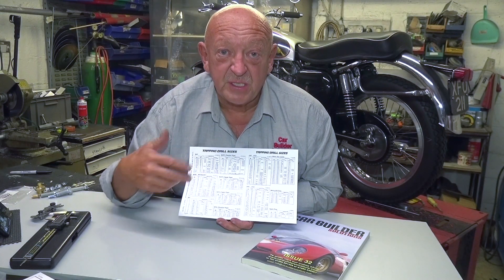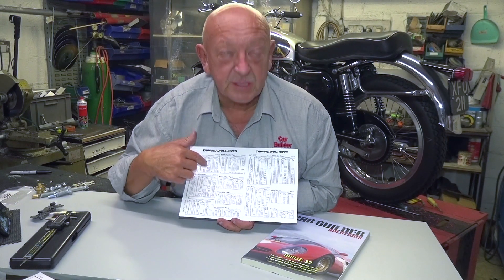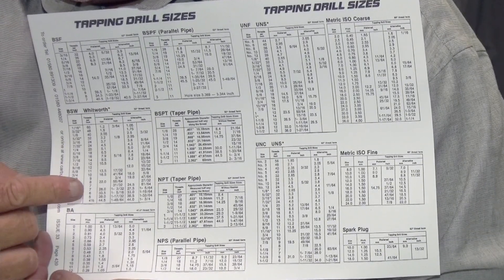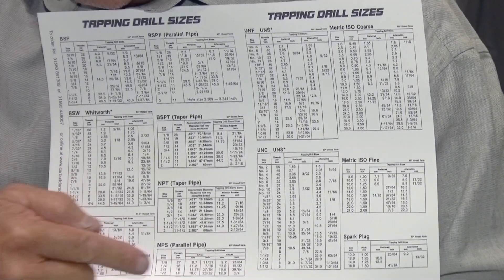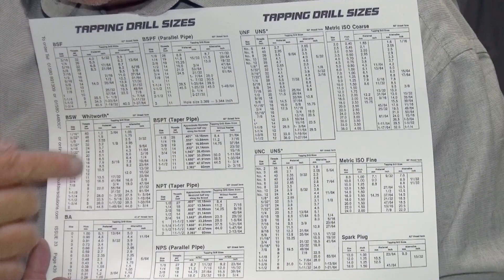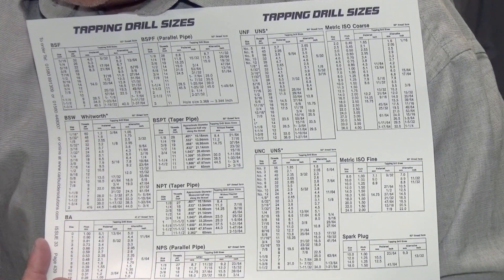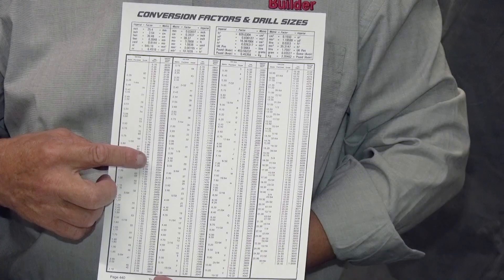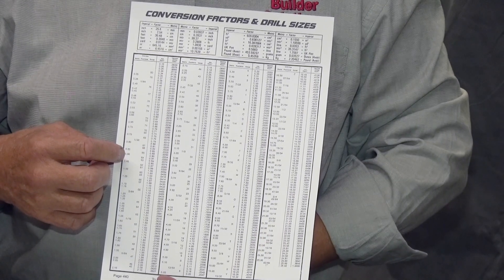The next thing is a thread chart like this one here, which you can find in the back pages of our catalogue. It lists all the data for pretty much every common thread in use today. And the last thing is a little bit of knowledge about inches, millimeters, fractions, and how to convert between them — and you'll find a conversion chart at the back of our catalogue which will help you do just that.